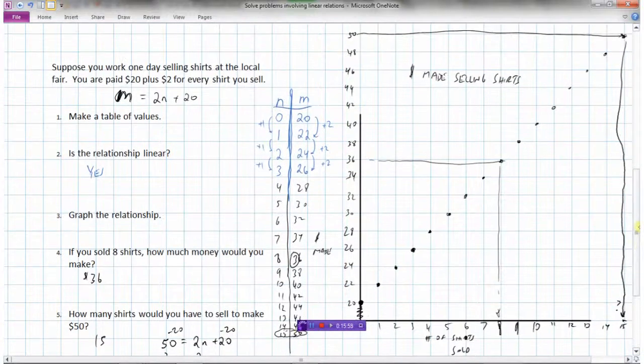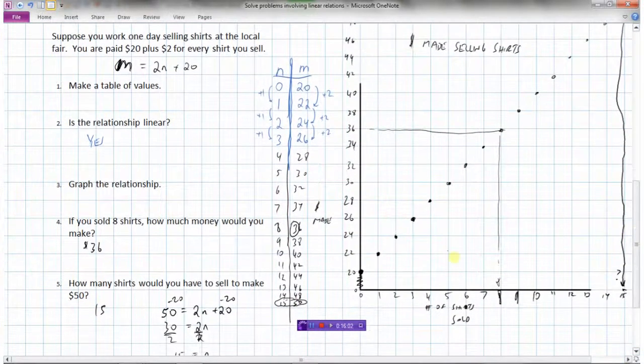Now in this particular example that we were doing here, with money made selling shirts, would it be possible to have a point in between 1 and 2? Say 1 and a half. Could we sell 1 and a half t-shirts and make, I guess, $23? Definitely not. You can't sell half a t-shirt or a third of a t-shirt. You couldn't say, how much money would I make if I sold 3.2 shirts? Not going to make any sense. So for sure on this one, our number of shirts are either 0, 1, 2, 3, 4. Definitely no data points in between those ones. So there's a couple of word problems that we've solved that involve linear relations.